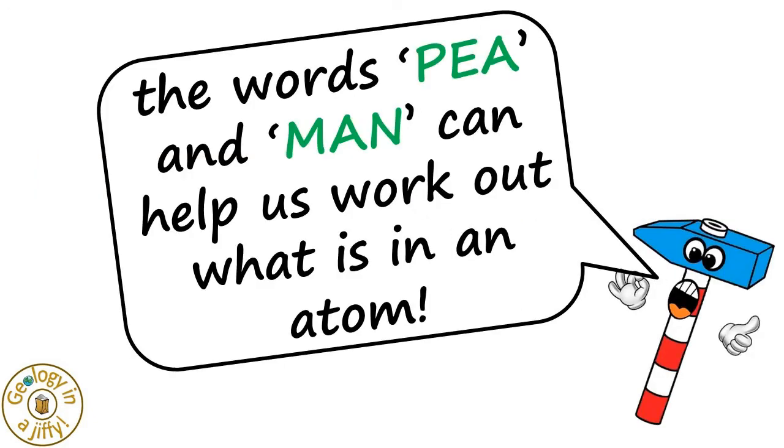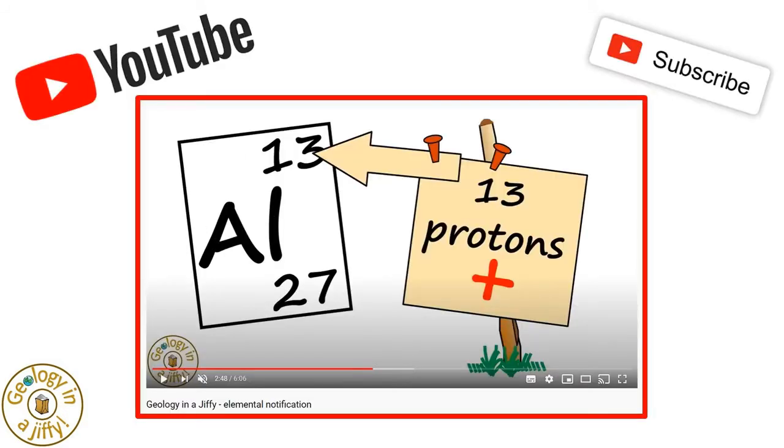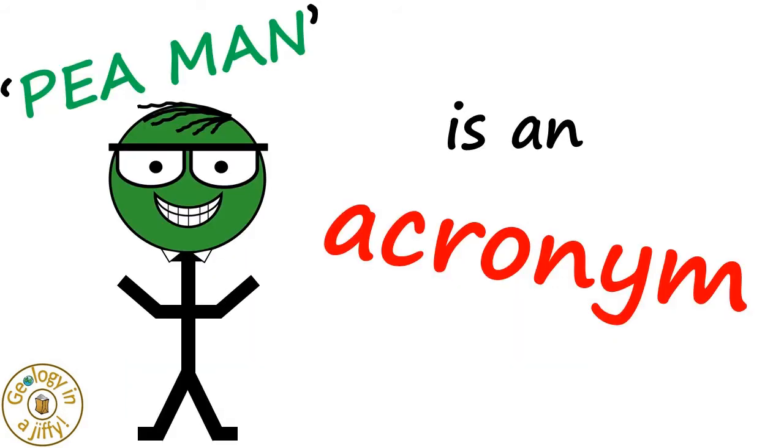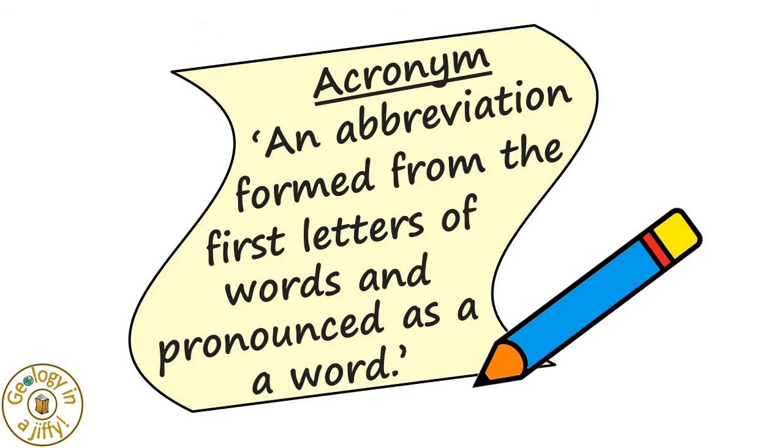The word P and man can help us work out what is in an atom. Please do watch our Geology in a jiffy video about elemental notation to find out more about what particles are in atoms. P-Man is an acronym. An acronym is an abbreviation formed from the first letters of words and pronounced as a word.